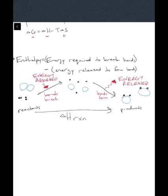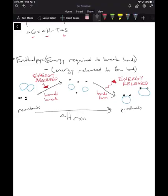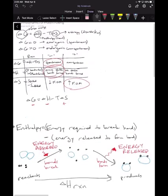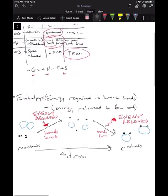In the previous video we talked about thermodynamics of protein folding and gave a formula for delta G. We said that for a reaction to be spontaneous it needed a negative delta G, and delta G equals delta H minus T delta S. In this video I'm going to go over the formulas from that table for delta H and delta S.